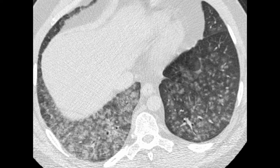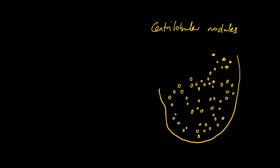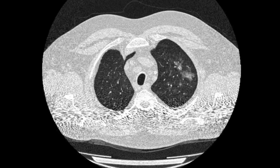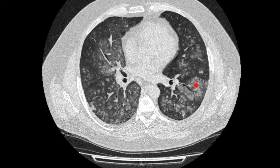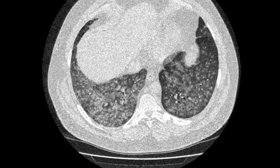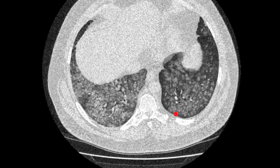As these nodules start coalescing they form more of a ground glass change. This demonstrates the central lobular nodules. This is the same patient, just illustrating the distribution of nodules throughout the central lobular portions of both lungs. You can see that in the periphery of the left lower lobe there is a gap between the central lobular nodules and the pleural surface, indicating that each of these nodules starts in the centre of the secondary pulmonary lobule.